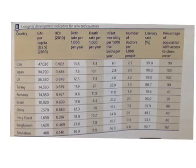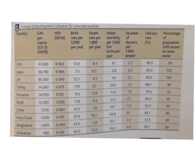The maximum number you could get in the HDI column is one. Wealthy countries like Japan have an HDI of over 0.9 — 0.902, very close to the number one. Therefore, it is a well-off country with a high Human Development Index. Whereas poorer countries, like Zimbabwe at 0.140, show that they don't have a high Human Development Index and are a poorer country.